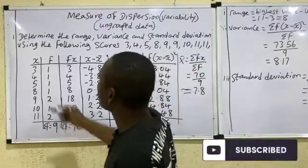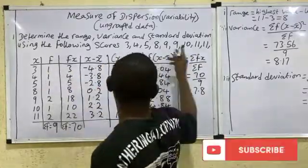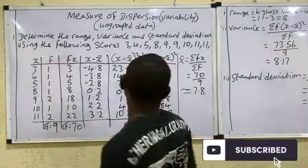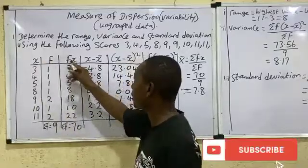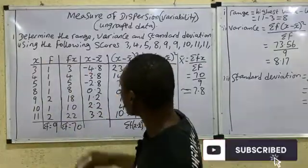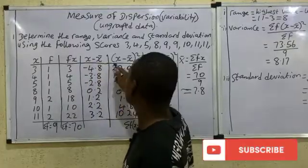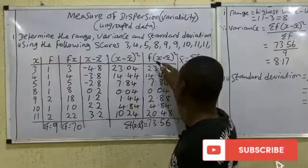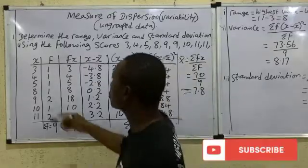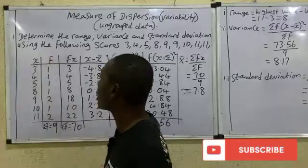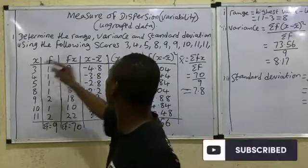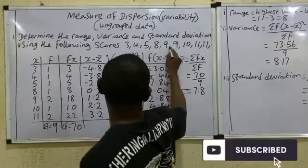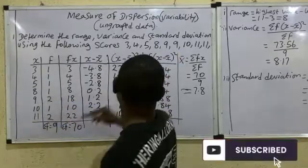This is a very simple procedure. Set up your columns: x, f, fx, x minus mean, (x minus mean) squared, and then f times (x minus mean) squared. The first thing to do is put your x values down: 3, 4, 5, 8, 9, 10, 11. Note that 9 occurs two times and 11 occurs two times, so we'll account for that.